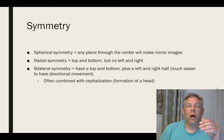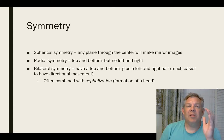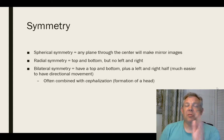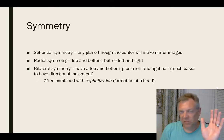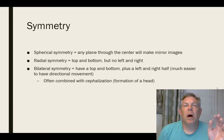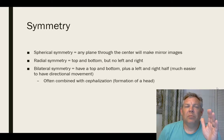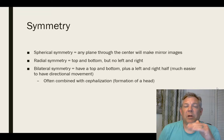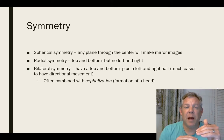It's very rare, but we have something called spherical symmetry. That means any plane that goes through the center, no matter what orientation, will always make mirror images. This is very uncommon. A little bit more common is radial symmetry. Radial symmetry is for organisms that have a top and a bottom, but no clearly identifiable left and right, but a clearly identifiable top and bottom.